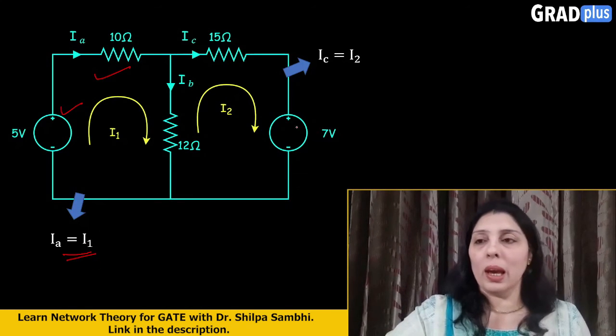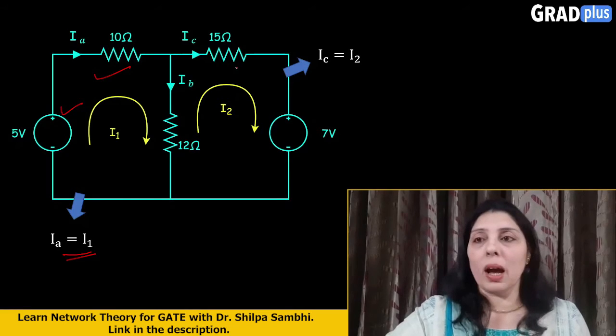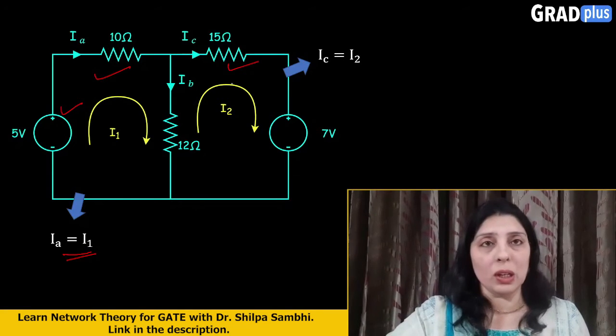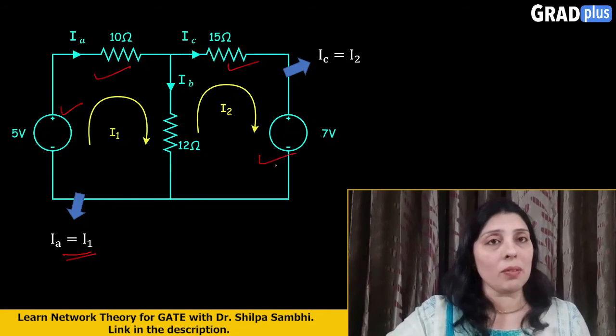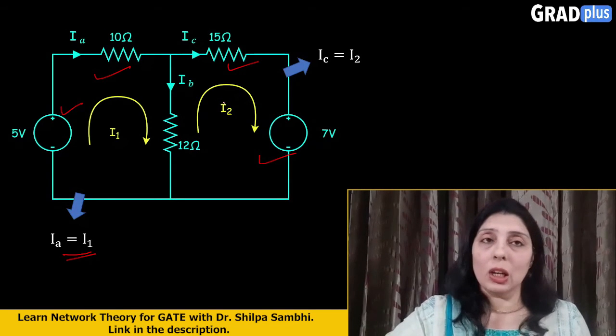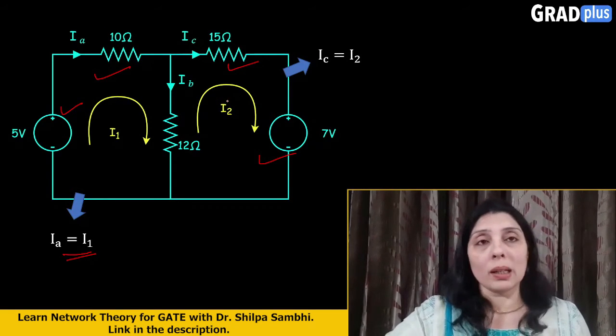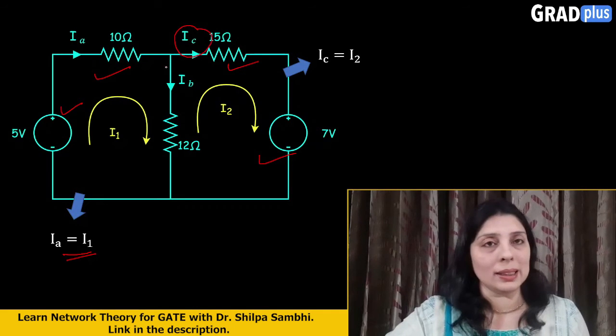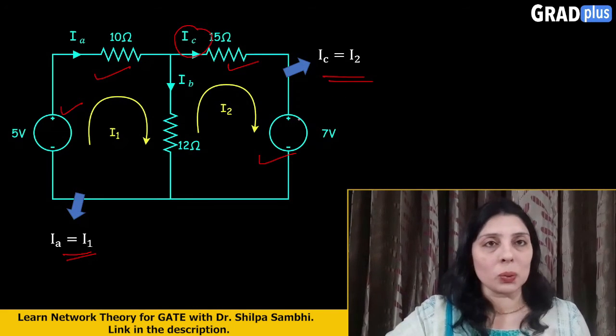In the same way, if we take up this branch which is consisting of this 15 ohm resistor here and this 7 volt voltage source here, so we have imagined the loop current of I2, but the branch current is Ic. So Ic is equal to I2.